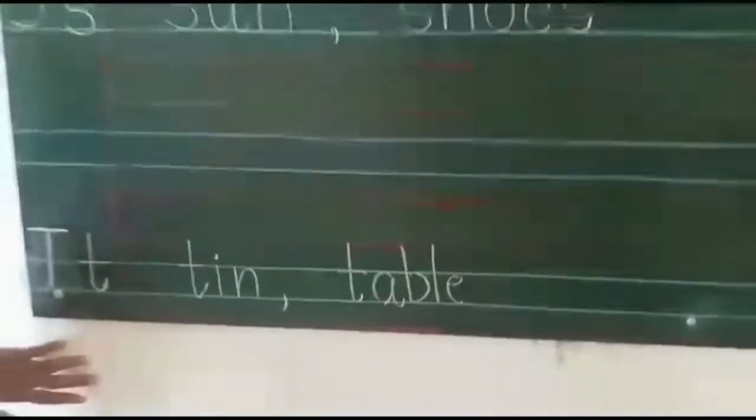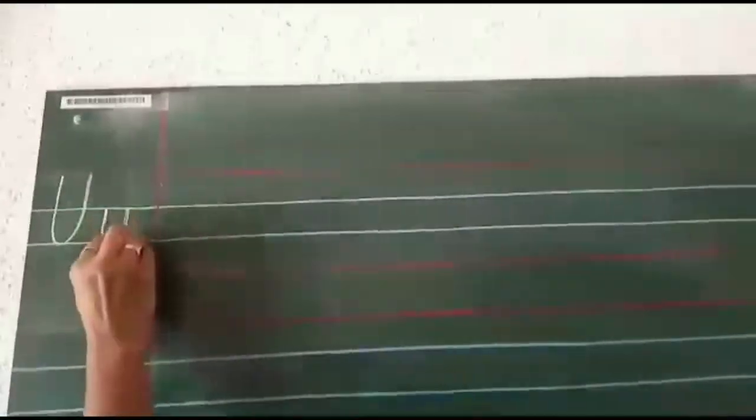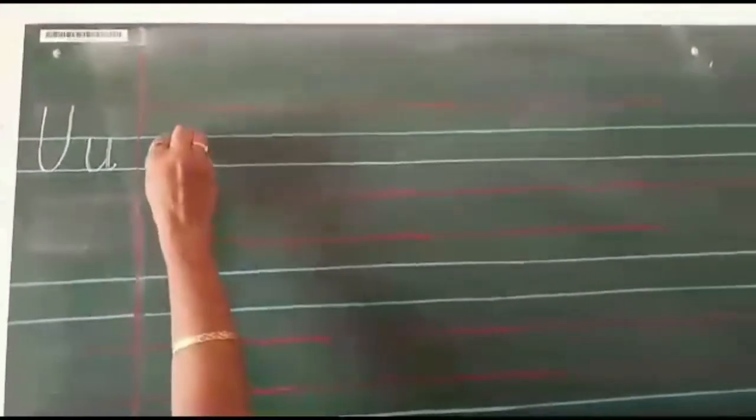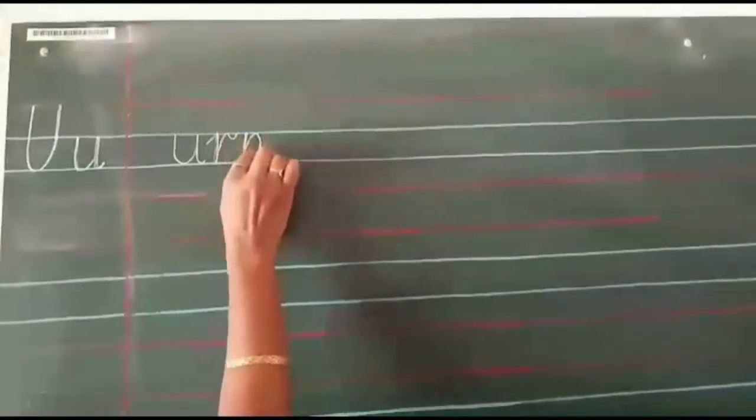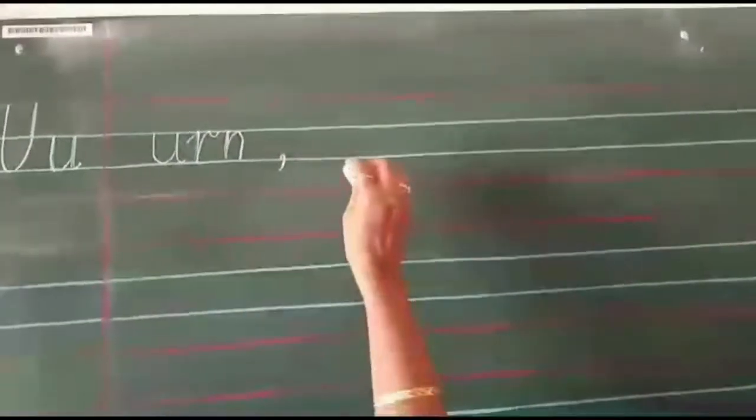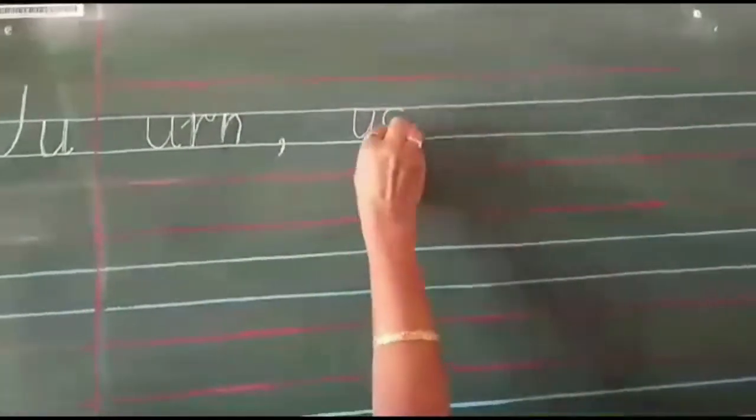Now, I don't have place so I will continue writing from the first line. But you have a place, so you will leave a line and then write. Capital letter U, script letter U. U for umbrella, U for unicorn, U for us. So we will write only two words: U, R, M — um. Comma, one finger space. U, S — us. Okay.